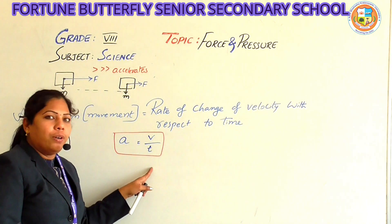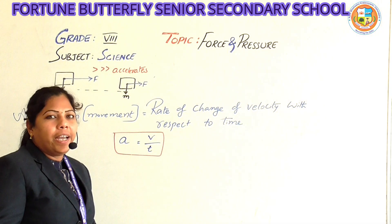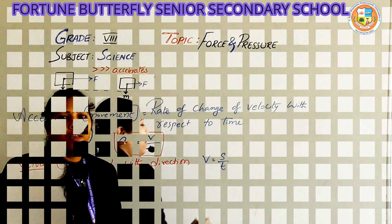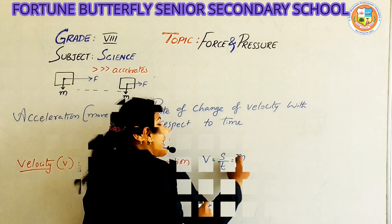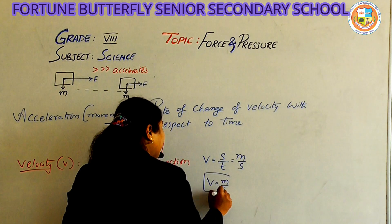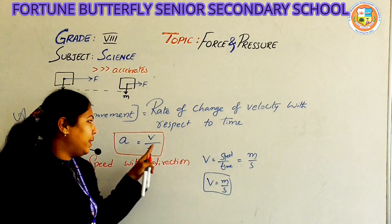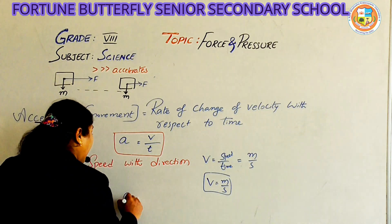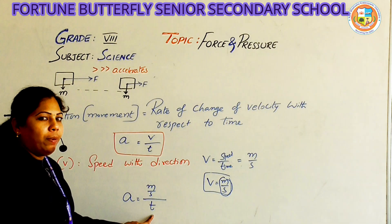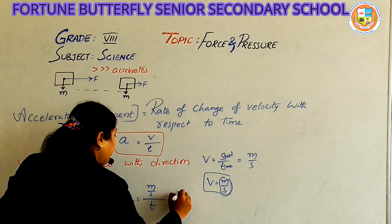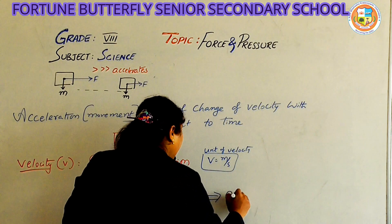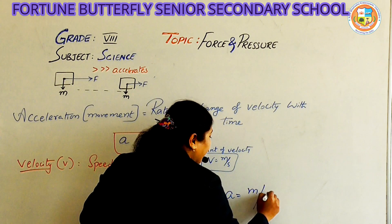What is meant by velocity? Velocity means speed with direction. Velocity is given by the formula speed divided by time. The unit for distance is meters and the unit for time is seconds, so the units of velocity are meters per second. Applying this in the acceleration equation: acceleration equals meters per second divided by seconds, which gives acceleration units of meters per second squared.